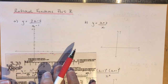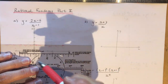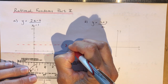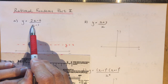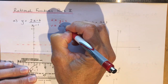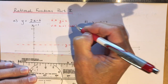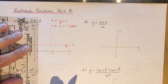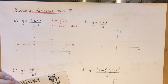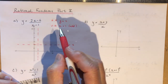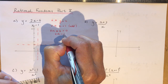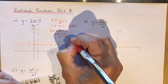Sketch a dotted line and label it y equals 2. The vertical asymptote is x equals 1 — it's an odd asymptote. Make the other dotted line at x equals 1. Now check for x-intercepts: what makes the numerator zero? Set 2x minus 6 equal to 0: 2x equals 6, so x equals 3. Plot the x-intercept at 3.